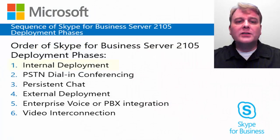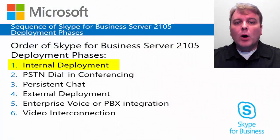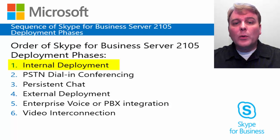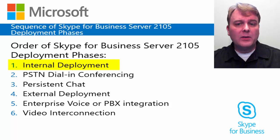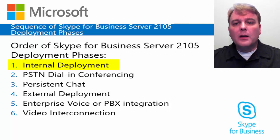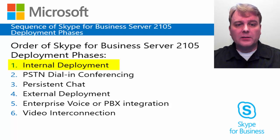First, let's discuss internal deployments. Most organizations start with installing and configuring Skype for Business Server 2015 functionality within the organization network through LAN, WAN, and VPN. They deploy IM, presence, and web conferencing capabilities.